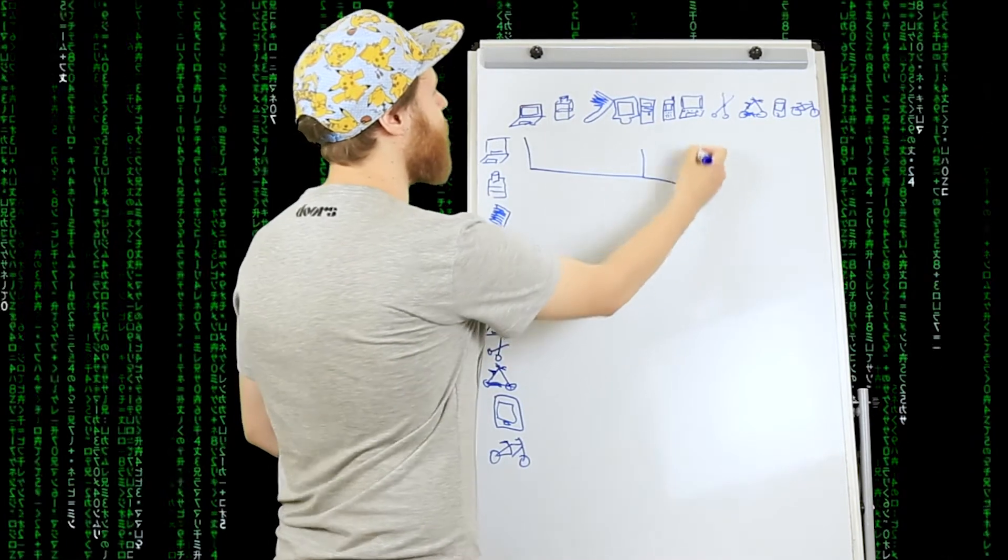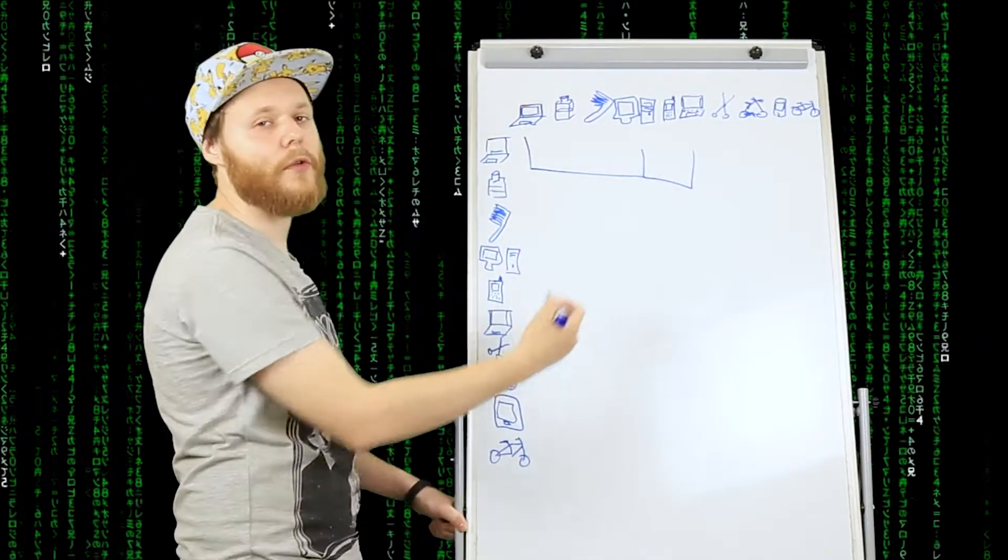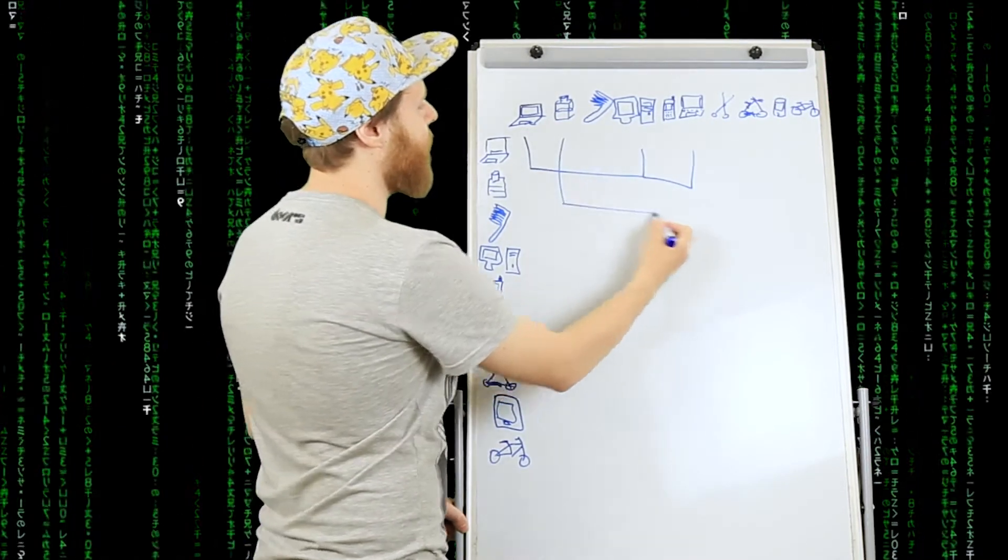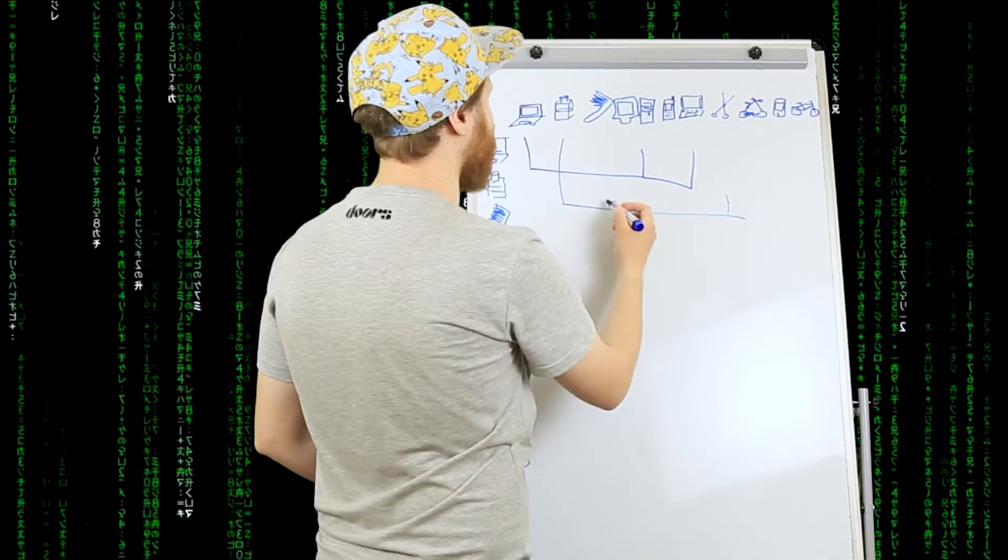которые имеют с ними общую выдачу. Например, для ноутбука это может быть компьютер или какие-то нетбуки. Для того, что связано с парикмахерской, это может быть ножницы, расческа и парфюмы.